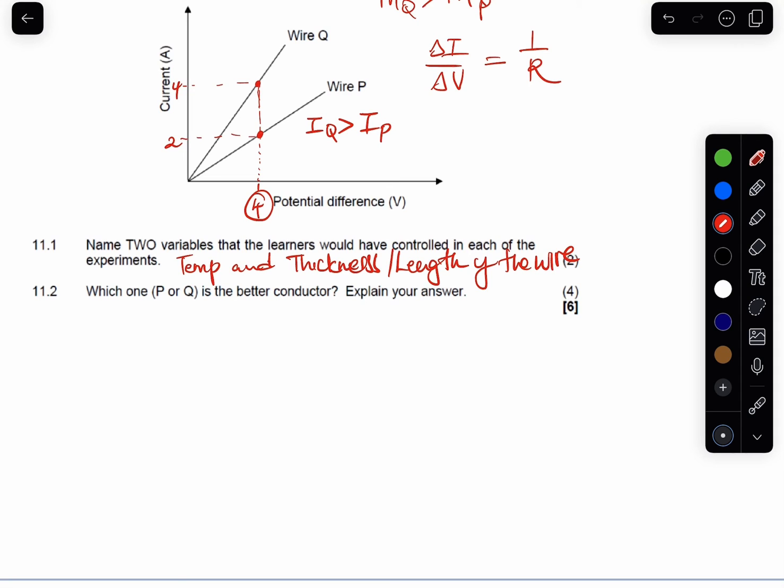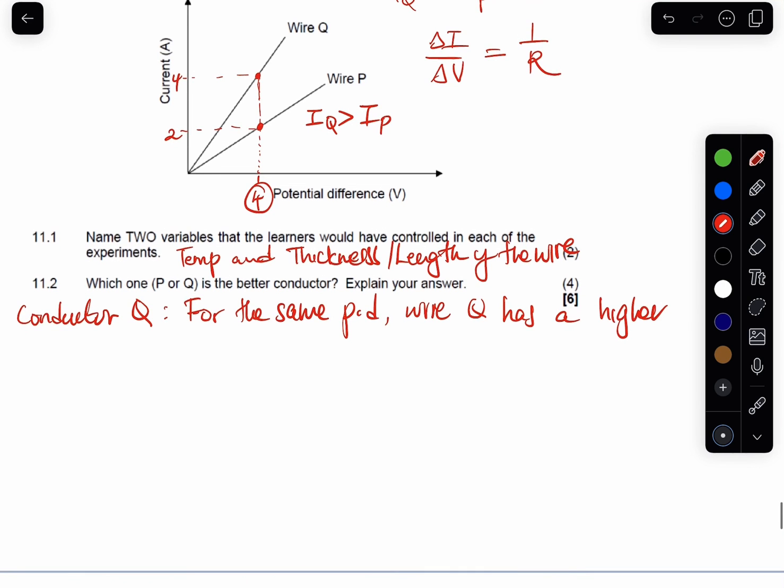So guys, since for the same potential difference there's a higher current of Q than P, so we will say the better conductor here is conductor Q. The reason we'll say, as I've said before, for the same potential difference, wire Q has a higher current than wire P.